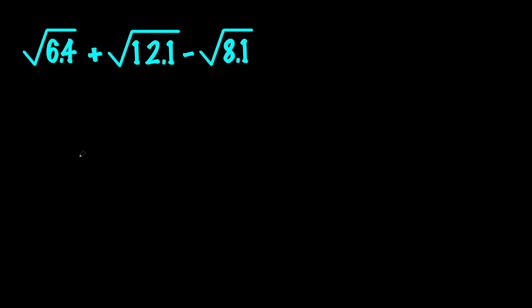First of all, we need to notice that 64, 121, and 81 are all perfect squares. The square root of 64 is 8, the square root of 121 is 11, and the square root of 81 is 9.